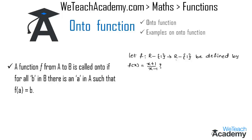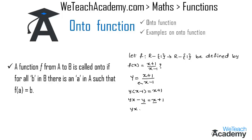Now consider another example. Let f be a function from R to R defined by f(x) equals (x plus 1) divided by (x minus 1). Let y equal (x plus 1)/(x minus 1). Cross multiplying gives y(x minus 1) equals x plus 1. Expanding: yx minus y equals x plus 1. Transferring x to the left and minus y to the right: yx minus x equals y plus 1. Taking x as a common factor on the left: x(y minus 1) equals y plus 1.